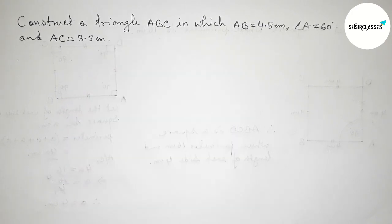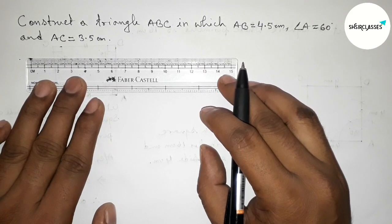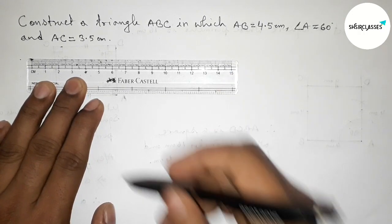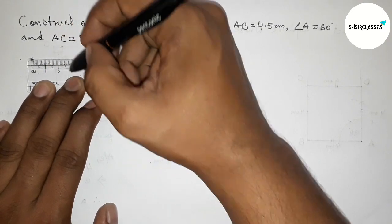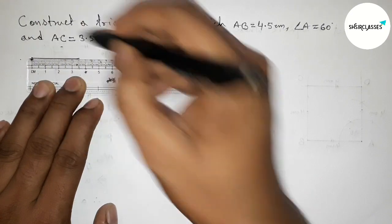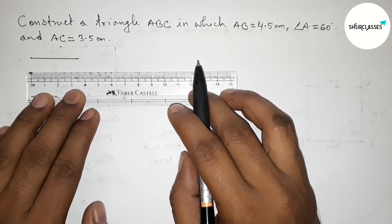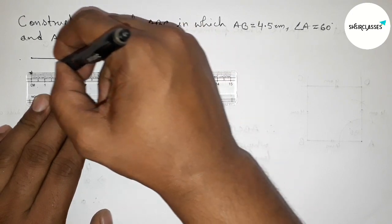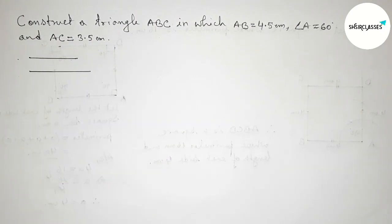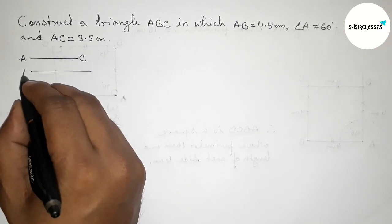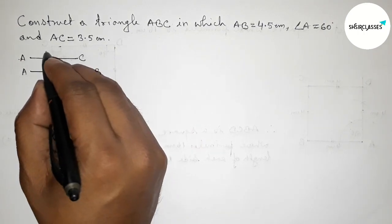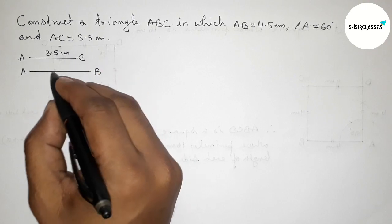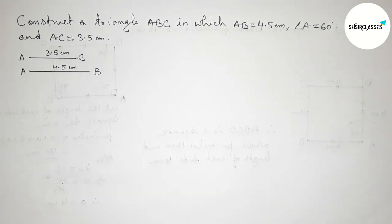Let's start. First, let us draw the given two sides. First, AC equals 3.5 centimeters — starting from zero, this is the 3.5 centimeter line. Then drawing another 4.5 centimeter line segment. So this one is the AC line and this one is the AB line: AC equals 3.5 centimeters, AB equals 4.5 centimeters.